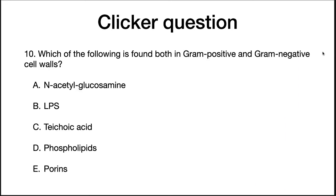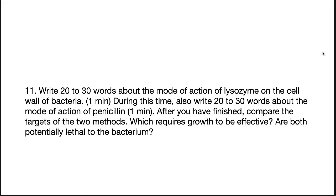Let's check your understanding. Which of the following is found both in gram-positive and gram-negative cell walls? I would also like you to take a minute to write 20 to 30 words describing the mode of action of lysozyme, and then write another 20 to 30 words describing the action of penicillin. After you have finished, compare the targets of the two methods — which requires growth to be effective? Are both potentially lethal to the bacteria? The correct answer to the first question is NAG, which is found in peptidoglycan. If you're unsure about your answers to the second question, go back and look at slides 50 and 51.